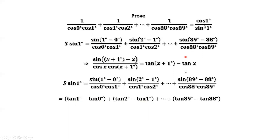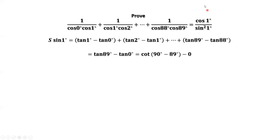The last term equals tangent 89° minus tangent 88°. We can now simplify this telescoping sum. Tangent 1° and tangent 1° cancel; tangent 2° and tangent 2° cancel; and so on. The only terms remaining are tangent 89° and tangent 0°.